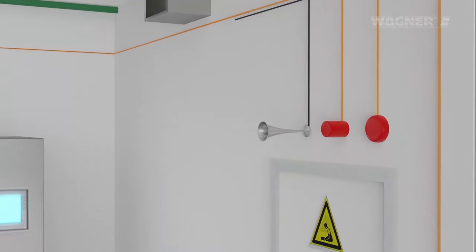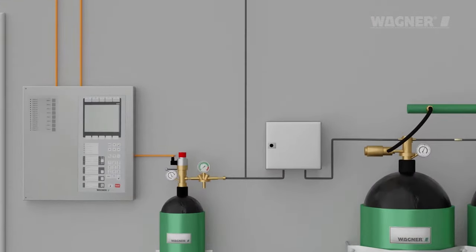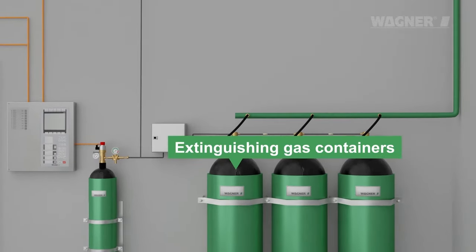A gas fire extinguishing system consists of several components: a pilot gas container and the extinguishing gas containers with extinguishing gas stored under pressure.